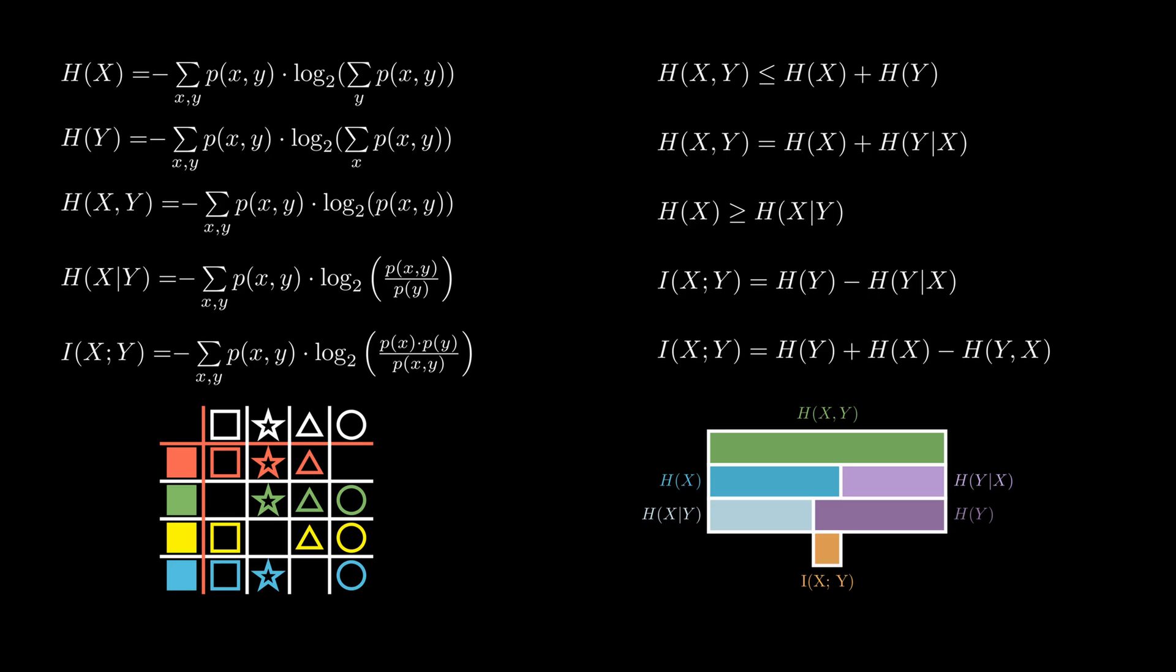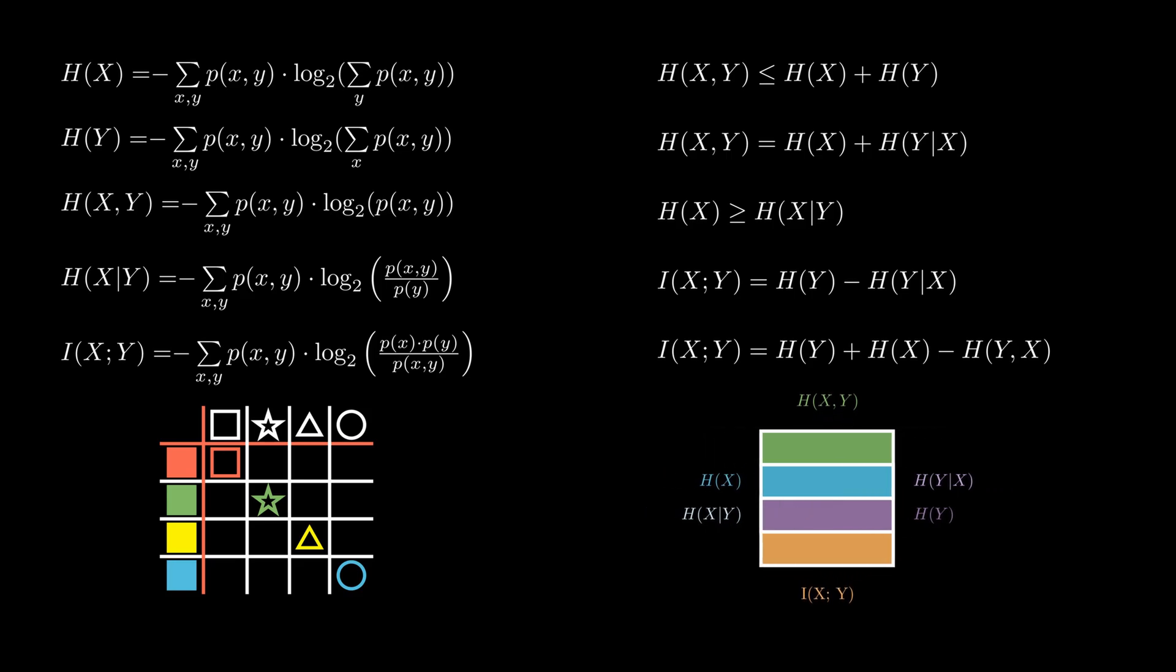The first special case is when both events have a deterministic relationship, meaning that knowing one event tells us everything about the other. In this case, conditional entropy is equal to zero because there is no uncertainty about the event if we know the outcome of the second one. Mutual information is equal to the entropies of the other variables since knowing one event tells us everything about the other one.